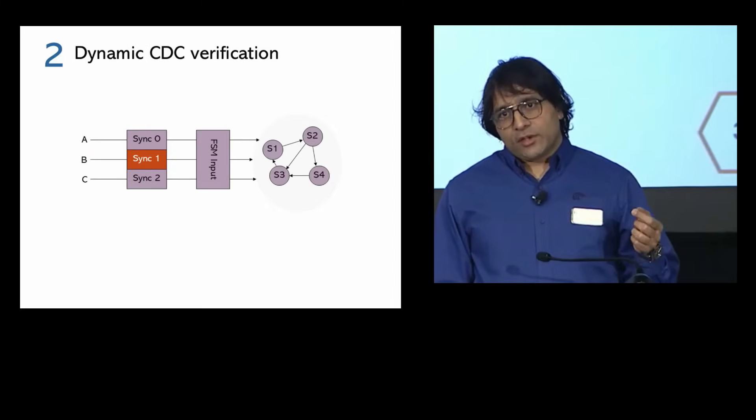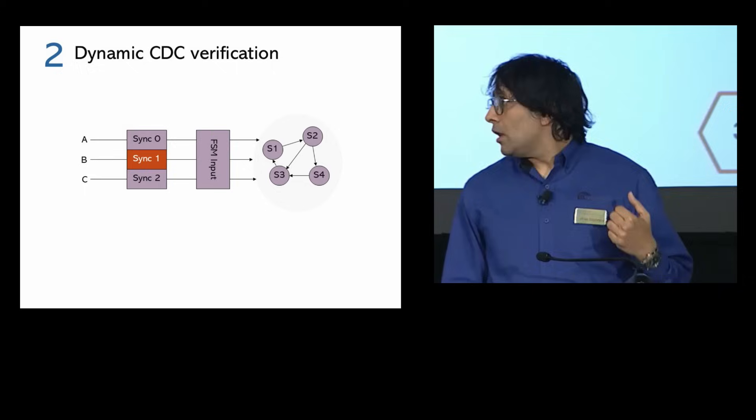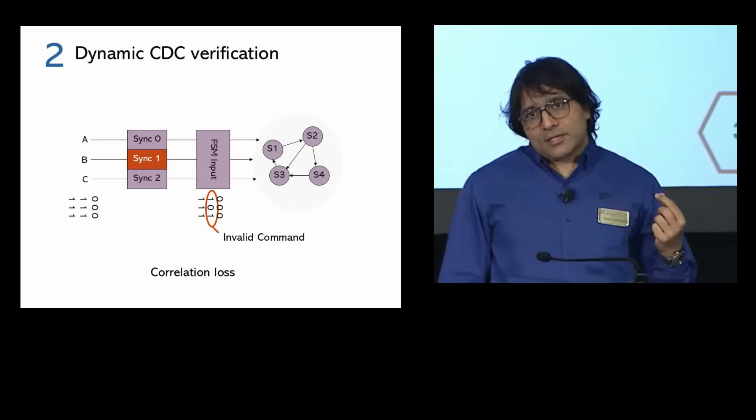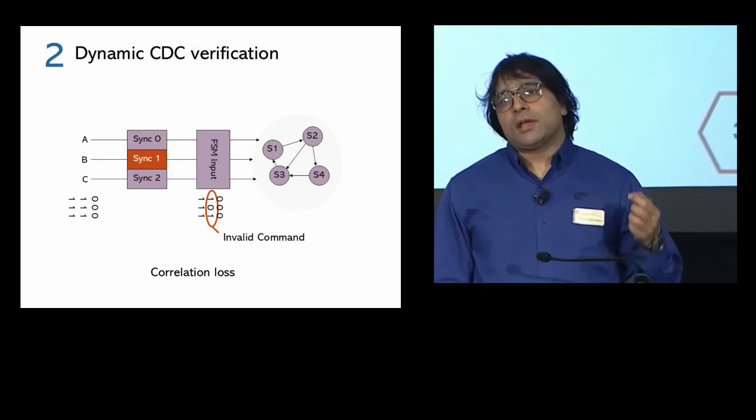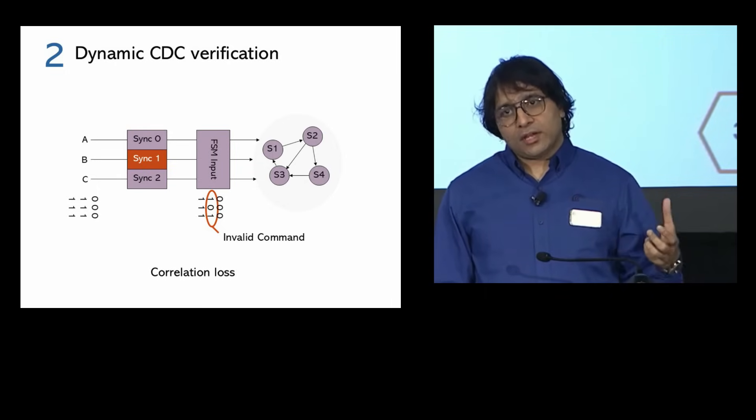The second aspect is dynamic CDC verification. Designers frequently add synchronizers to prevent metastability in their design, but these synchronizers can cause correlation loss at the fan out when they converge.